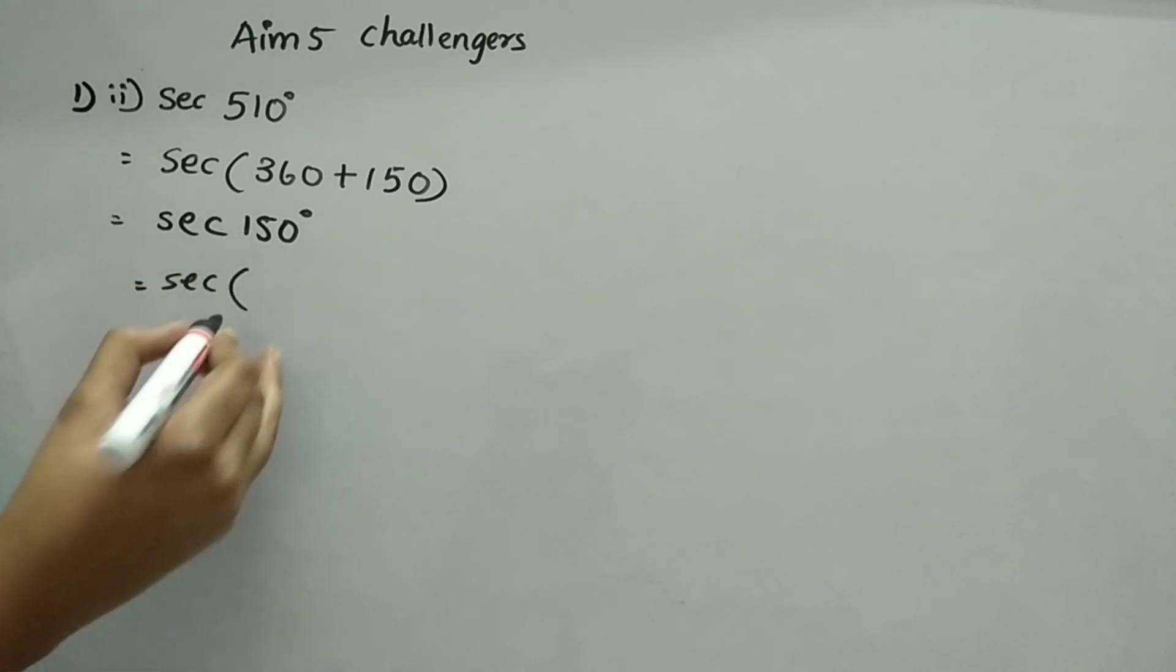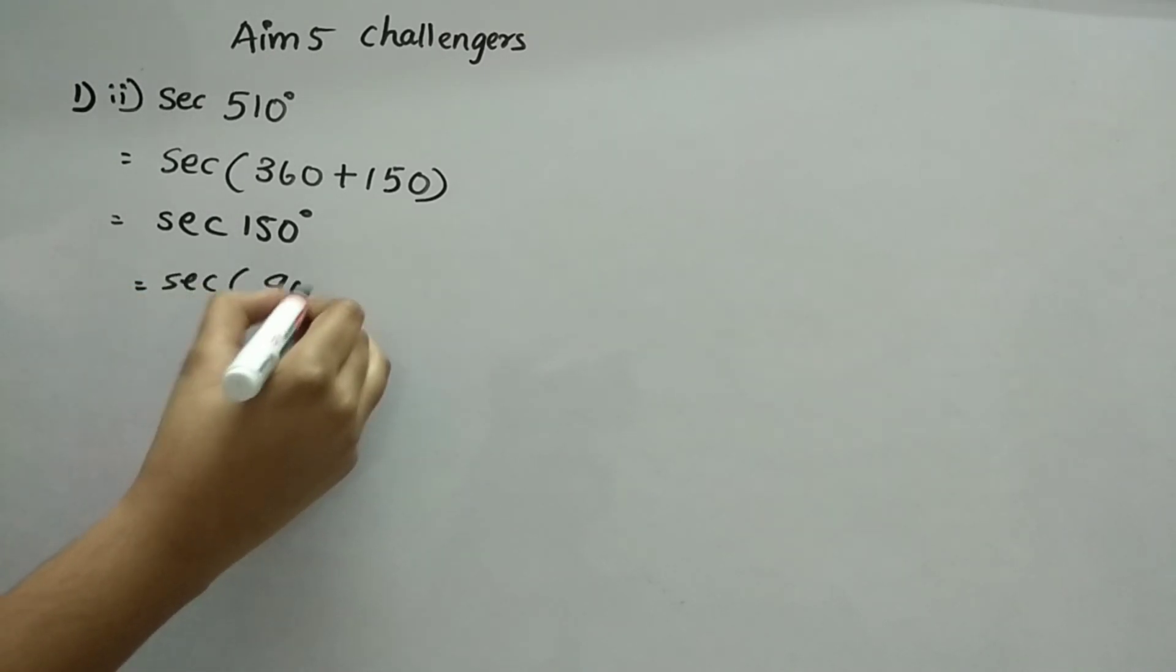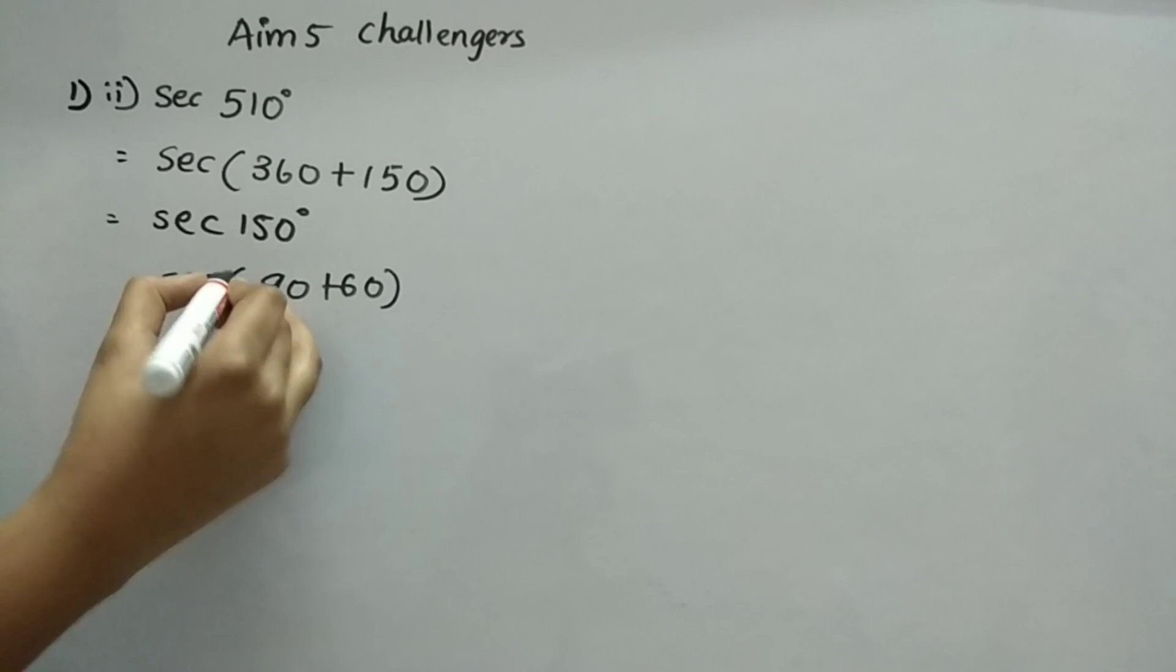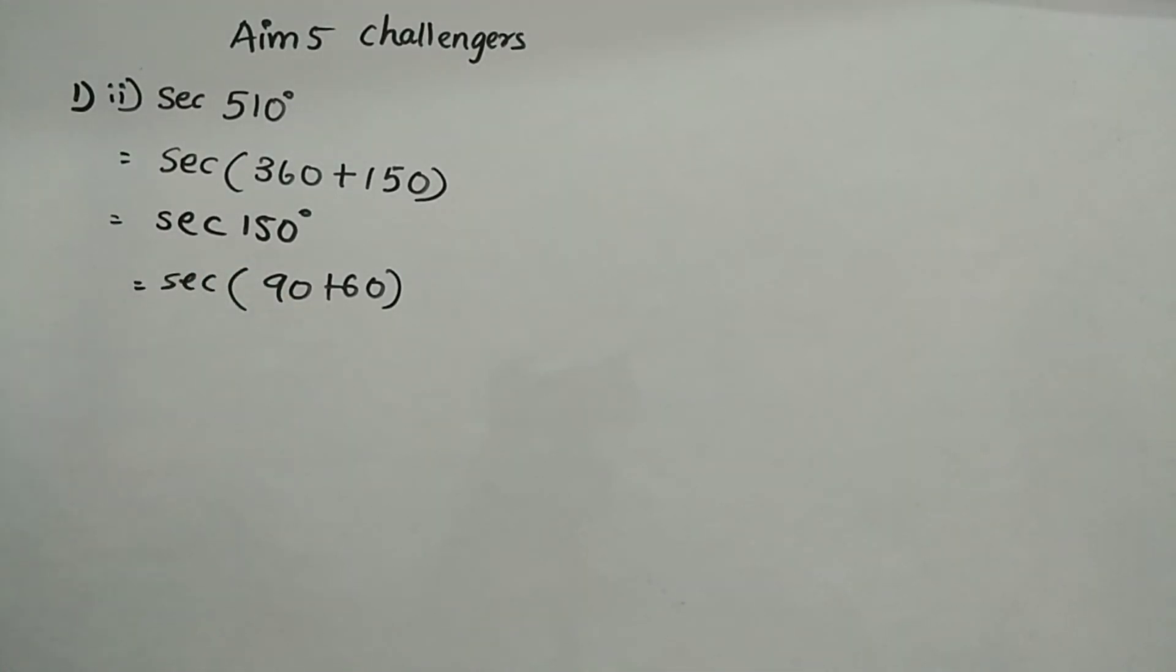Now, secant 150, you can write that as 90 plus 60. Now, 1 into 90. That is the odd multiple. So, this will become minus cosecant 60. It is minus 2 by root 3.